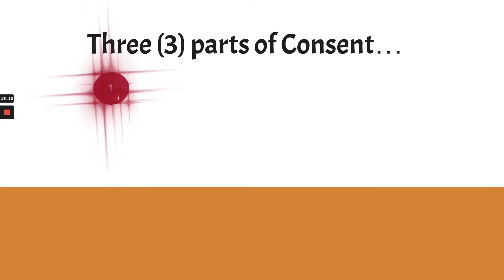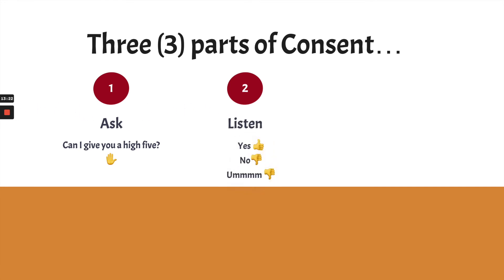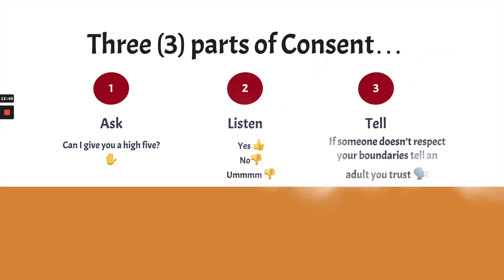So there are three parts to consent or permission. The first part is asking — for example, 'Can I give you a high five?' The second part is to listen: listen for a yes or a no. If they say 'hmm, not sure,' that's a no. If it's not the word yes, it's automatically a no — don't do it. The third part to consent is tell or report. If someone doesn't respect your boundaries, tell an adult you trust right away. For example, if they ask 'Can I give you a high five?' and you say no or you're unsure, and they do it anyway — that's a time to tell an adult you trust to get help.